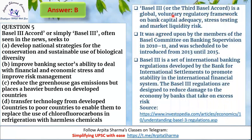Basel III, or the third Basel Accord, is a global voluntary regulatory framework on bank capital adequacy, stress testing, and market liquidity risk. Agreed upon by the Basel Committee on Banking Supervision in 2010–2011 and scheduled for introduction from 2013 to 2015, it was developed by the Bank for International Settlements to promote stability in the international financial system and reduce damage caused by banks taking on excess risk. All other options relate to biological diversity, greenhouse gases, or technology transfer — not banking.